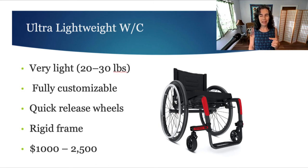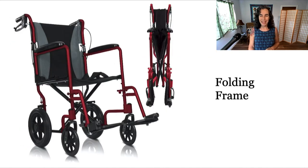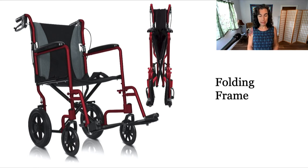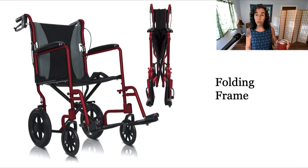This type of ultra-lightweight chair is typically used by individuals with paraplegia or very low-level quadriplegia — you need some upper body power to make it go. Here's an example of a folding frame: on the left the chair is open, on the right it's folded up. It has a sling seat which collapses, it's easier to store, and it can be customized. Folding frames are usually ordered for clients with a diagnosis of CVA, orthopedic injuries, traumatic brain injury, or other medical diagnoses, and we often see these in an acute care or hospital setting.